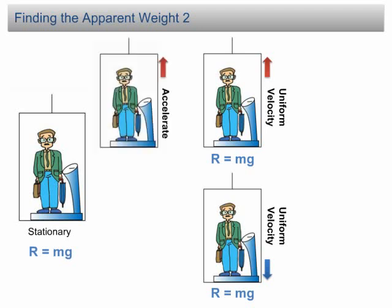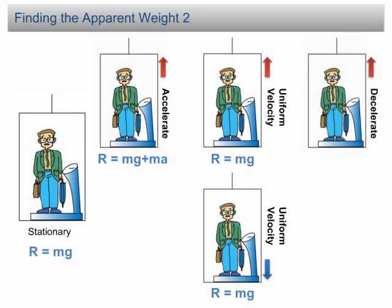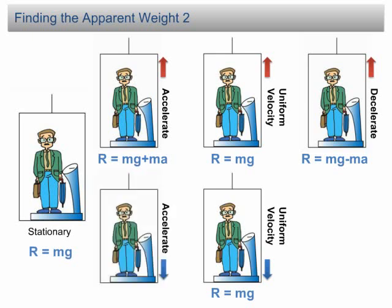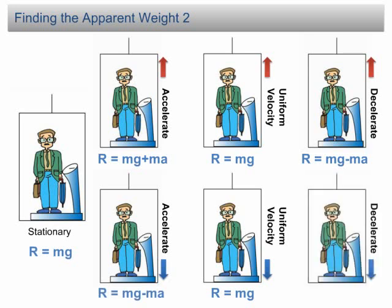If the object accelerates upward, the apparent weight can be calculated from the equation R equal to mg plus ma, where a is the acceleration of the object. If the object accelerates downward, the normal reaction is equal to mg minus ma.